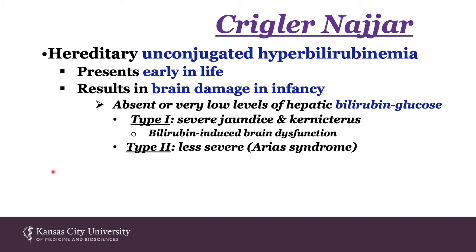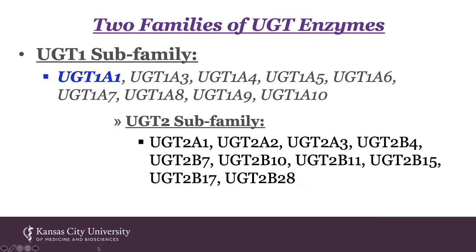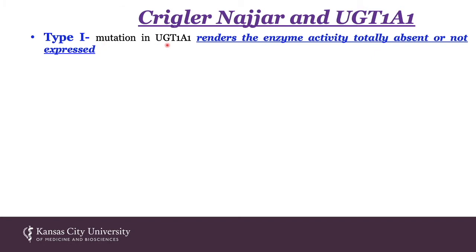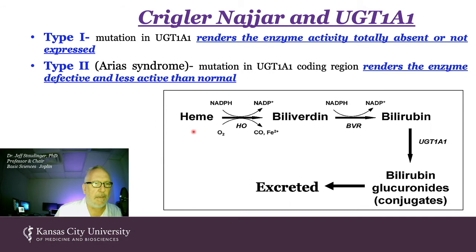Humans have two families of UGT enzymes: UGT1 and UGT2 subfamilies. We are focused on UGT1A. In type 1 Krigler-Nijaar, the mutation in UGT1A1 renders enzyme activity totally absent. In type 2, the mutation renders the enzyme defective but still partially active. The pathway: heme is converted to biliverdin by heme oxygenase, biliverdin reductase reduces it to bilirubin, and UGT1A1 then glucuronidates bilirubin for excretion.